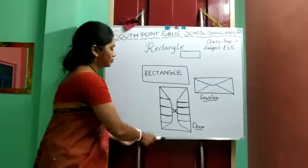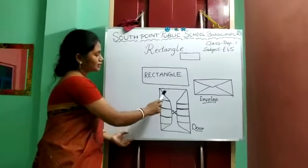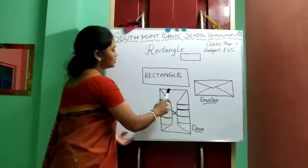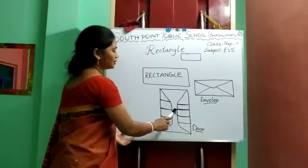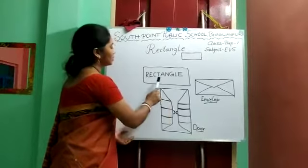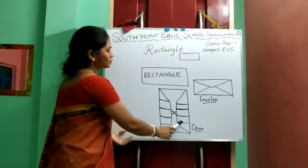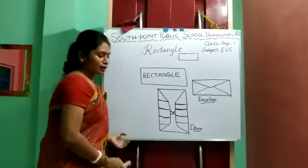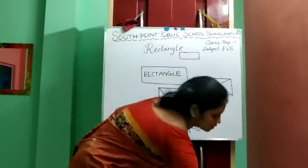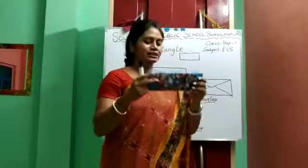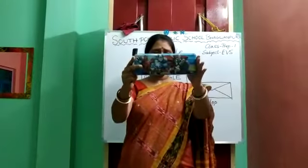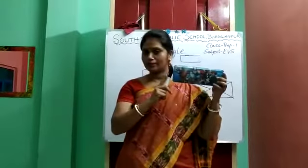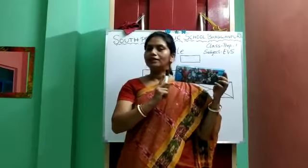Now look at the door. This is a picture of a door and its shape is rectangle. Now look at the pencil box. This is a pencil box and the shape of this pencil box is rectangle.